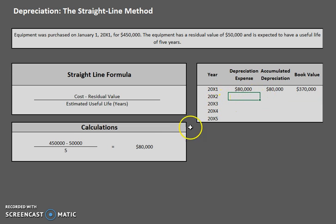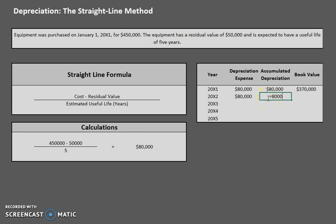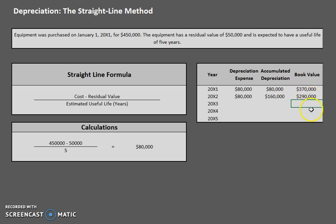Let's move on to year two. We don't have to do any other calculations — we already figured that out. Year two, we have the same amount: $80,000 depreciation expense. Now our accumulated depreciation is $80,000 from last year plus $80,000 from this year, so now we have $160,000 accumulated. And our book value, as always, is cost minus accumulated depreciation: $290,000. Every year this is going to be going down a little bit more.